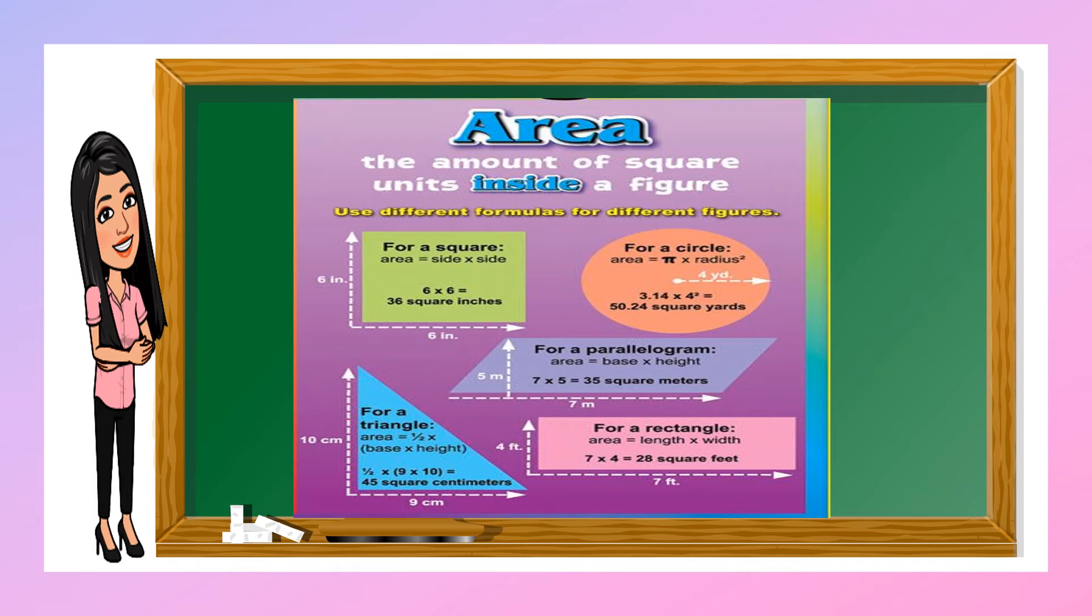So for a square, we have side times side. A triangle, we have 1 half times base times height. A parallelogram is base times height. A rectangle length times width. And for a circle, pi times radius squared.